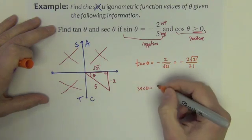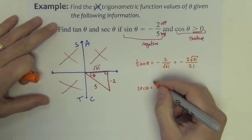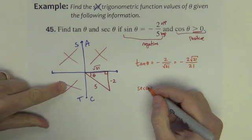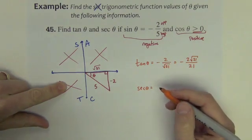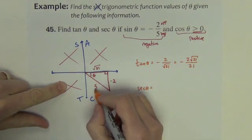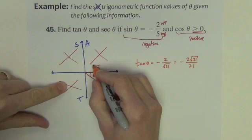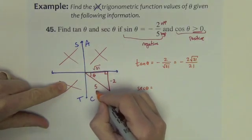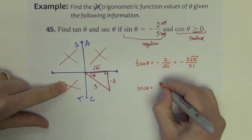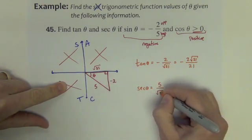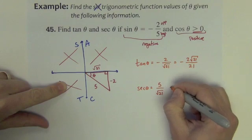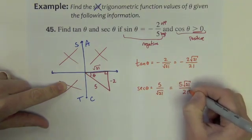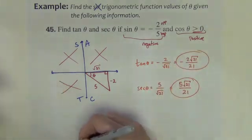Secant of theta: I think of cosine first, which is adjacent over hypotenuse. Secant is the reciprocal, so it's hypotenuse over adjacent. Bringing up the radical gives us the final answer.